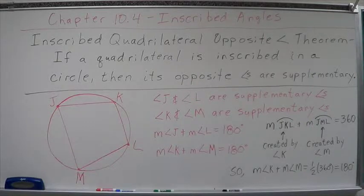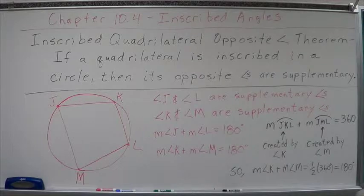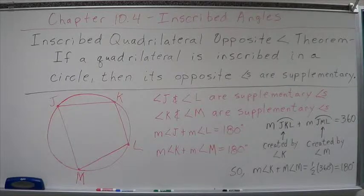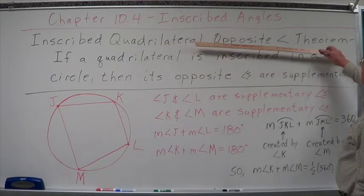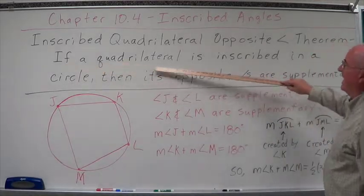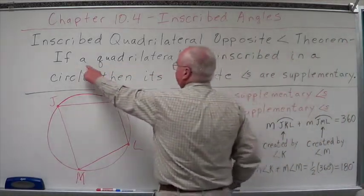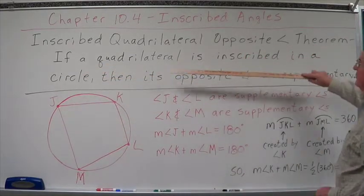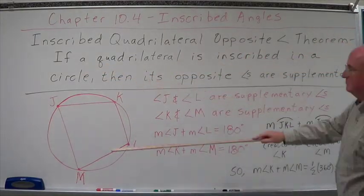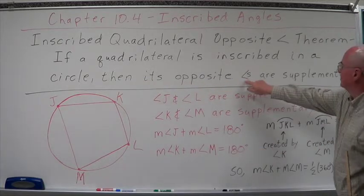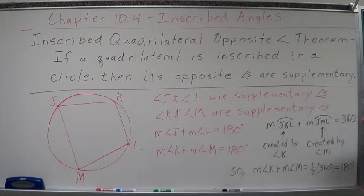The last concept we want to talk about on inscribed angles is pretty simple. We'll actually prove it — I'll show you what the proof is. I call it the Inscribed Quadrilateral Opposite Angle Theorem. Long name, simple concept. If a quadrilateral is inscribed in a circle, then its opposite angles are supplementary.